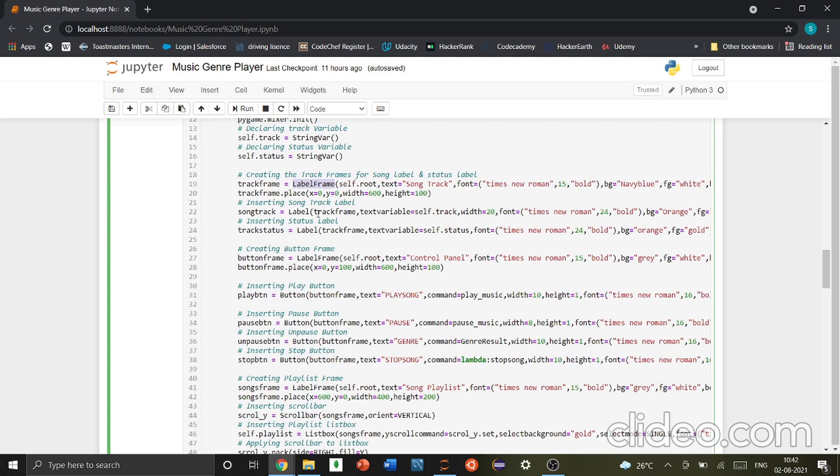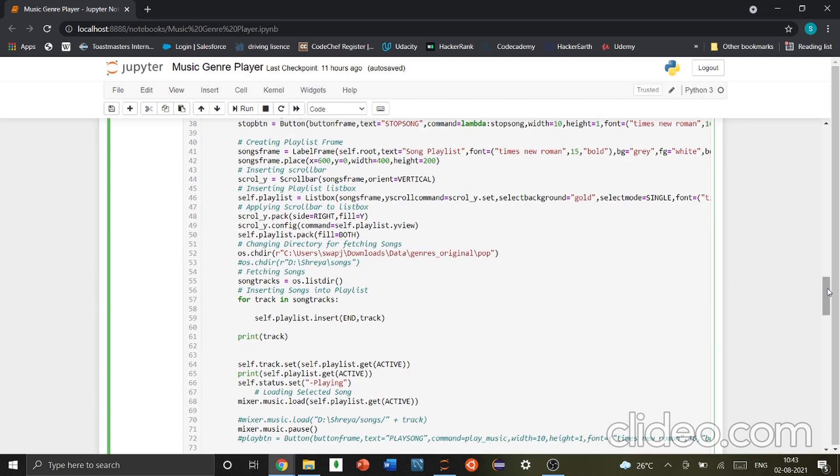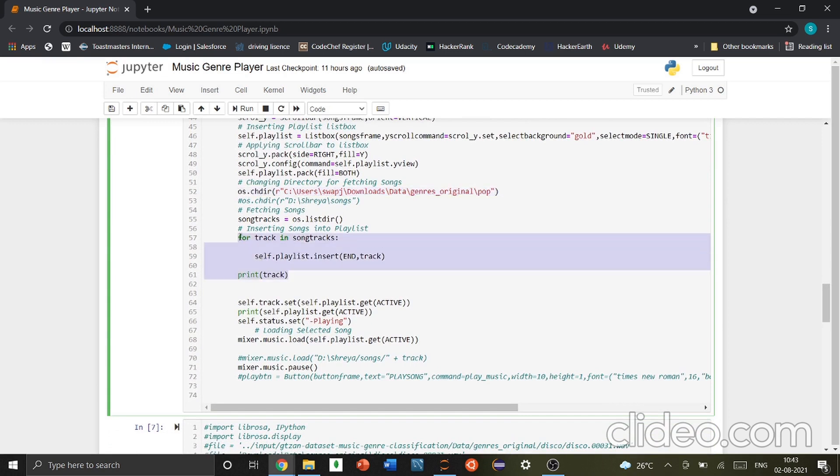We have label frame, which is the outer part of the labels. Soundtrack has the labels present inside of it. Basically, we are displaying the different types of songs that are there in the file that we have mentioned. Label track status is basically the song that we are going to play. Then, we have the button frame. Button frame is also another type of label frame in which we have mentioned buttons like pause, play. You can see here pause, play, stop. Then, we have the song list, which is also a label frame. We have the scroll bar and here, like I said, we have mentioned the directory.